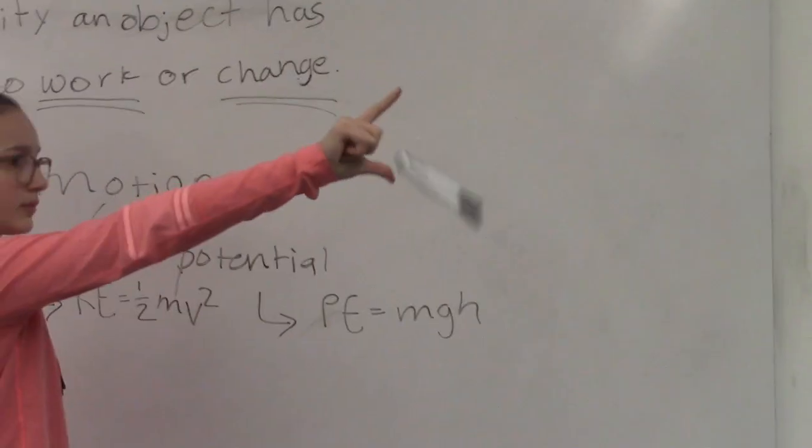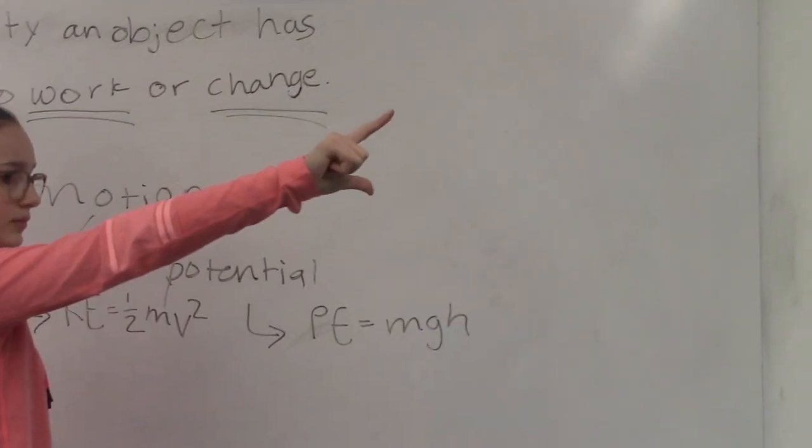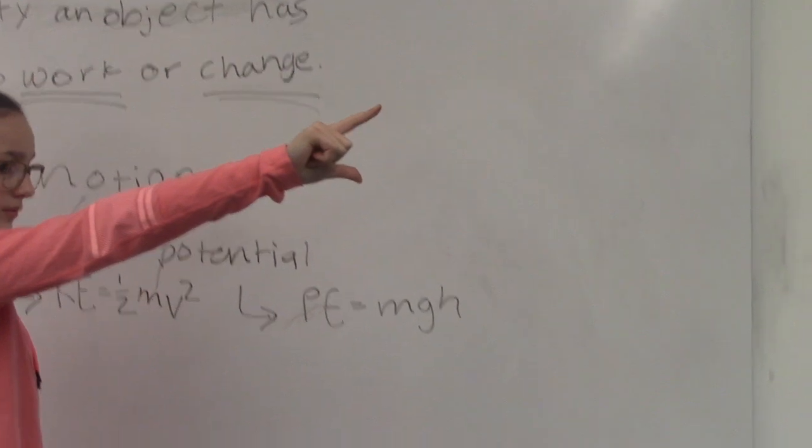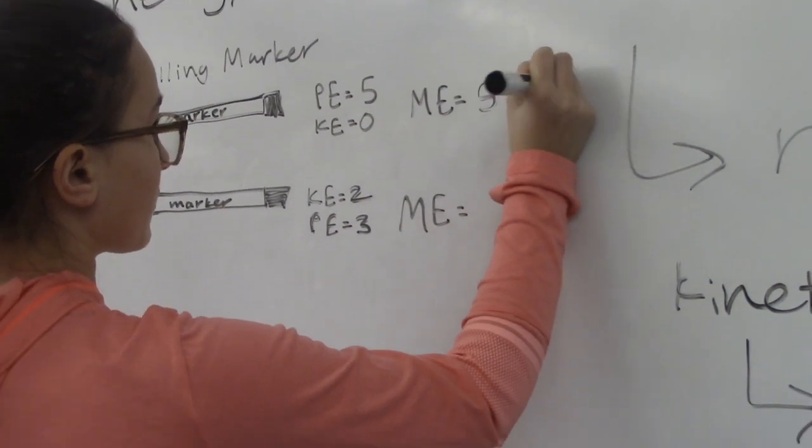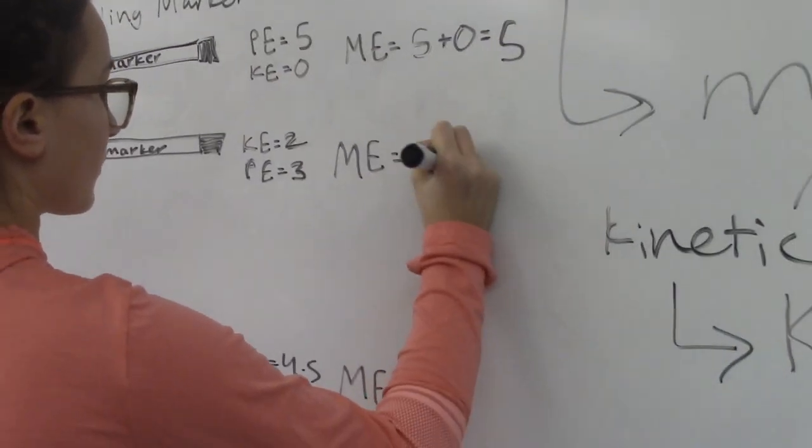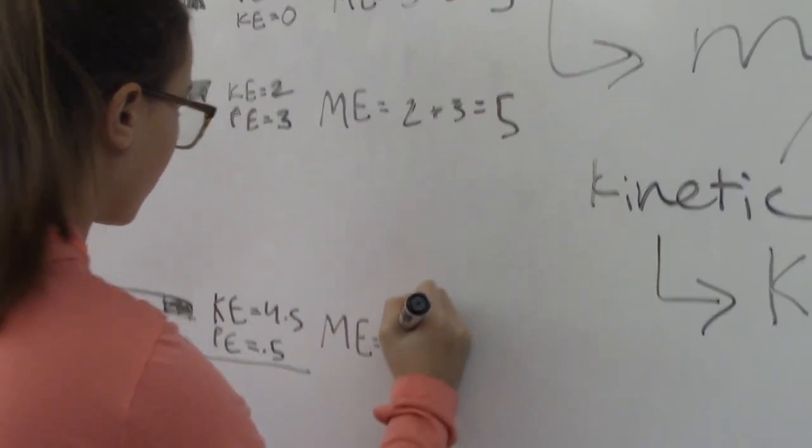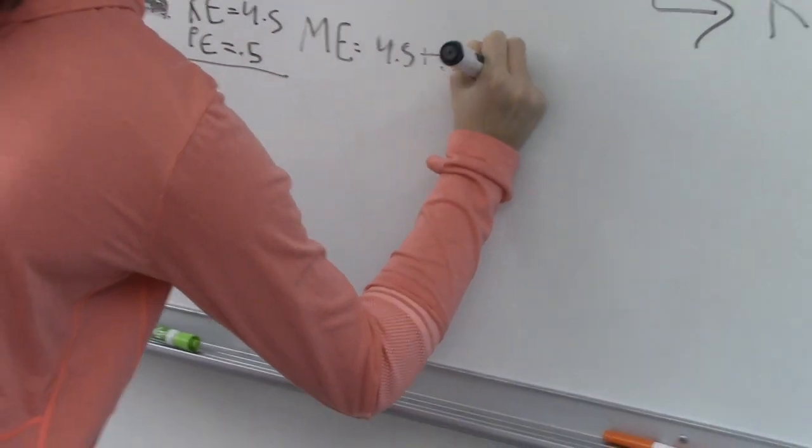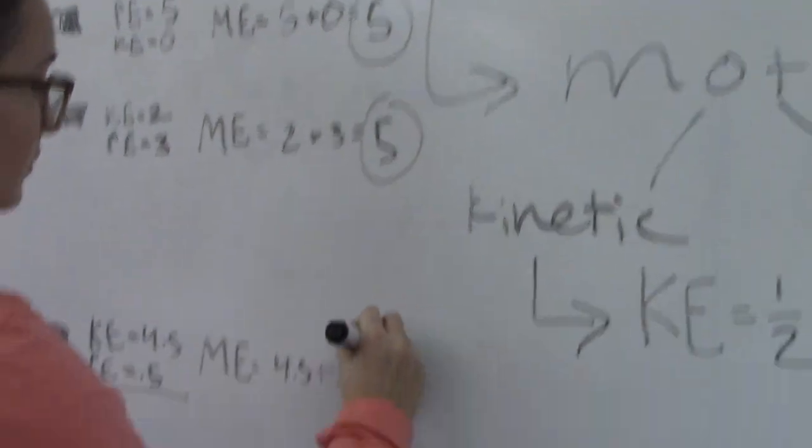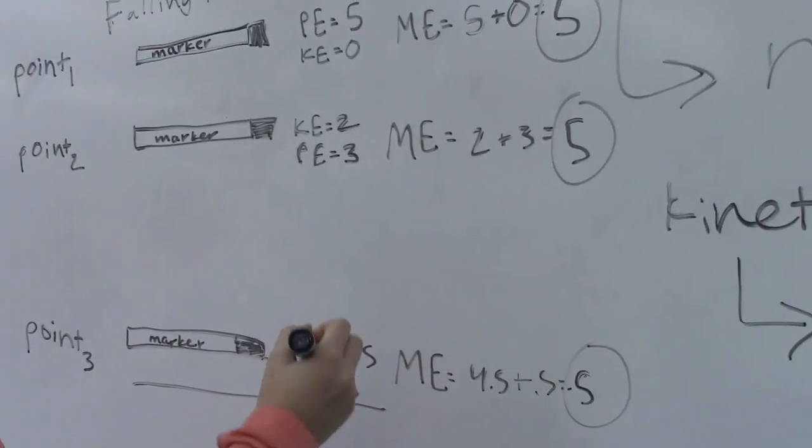As soon as the marker hits the ground, the marker builds up potential energy again. At any part of this marker's journey, the added value of the kinetic and potential energy is going to be the same. Even though it will have more kinetic energy here, it will have less potential energy. So the sum, or mechanical energy, will be the same.